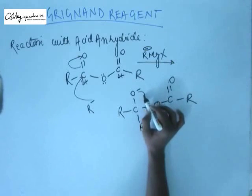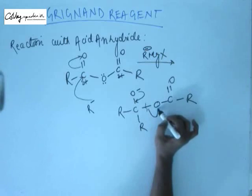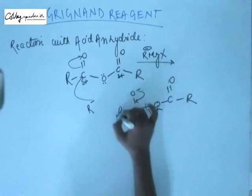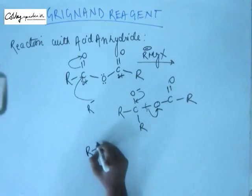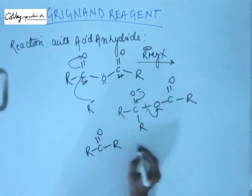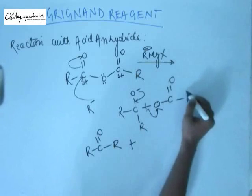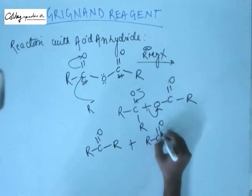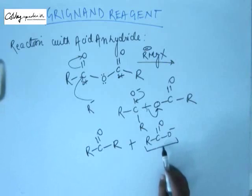If we bring in the negative charge to form a bond here and put the electrons of this bond into the orbital of this oxygen, from this part we get a C=O with R on both sides — giving us a ketone — and from the other half we get a carboxylate ion, which is stable being resonance-stabilized with two equivalent resonating structures.